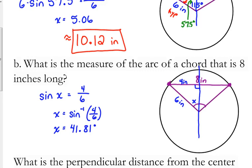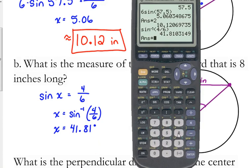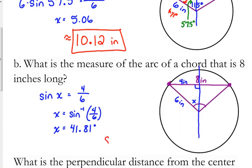But that's not the final answer. We wanted the measure of the arc corresponding to that chord, so that was only half of it. So, we need to turn around and multiply this one by 2. 83.62 is our final answer.